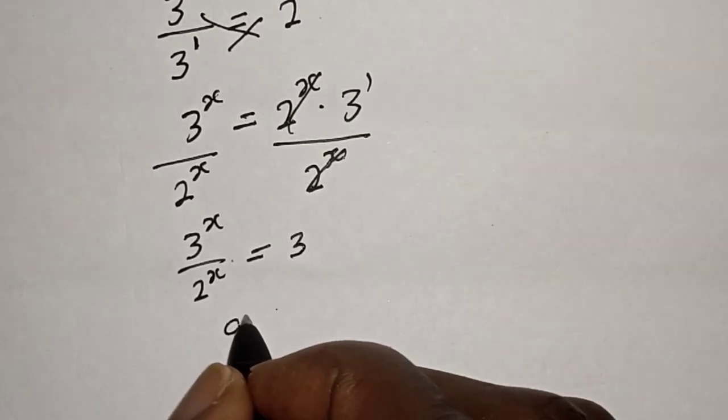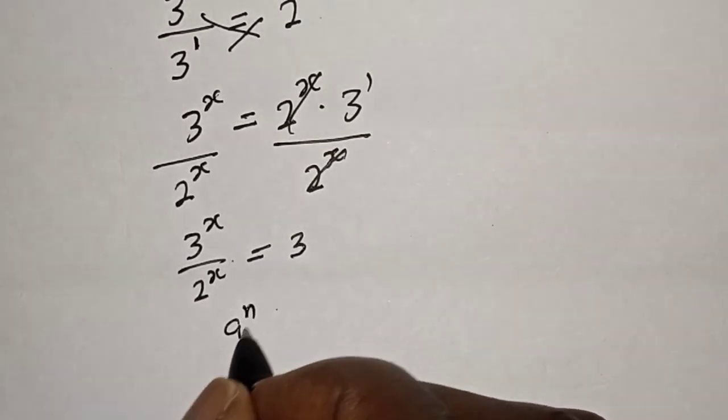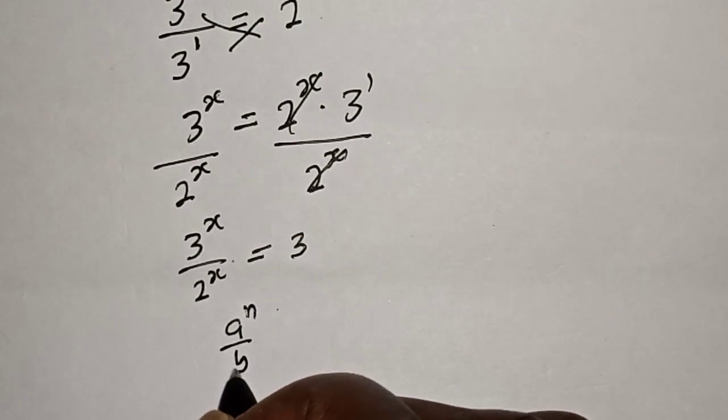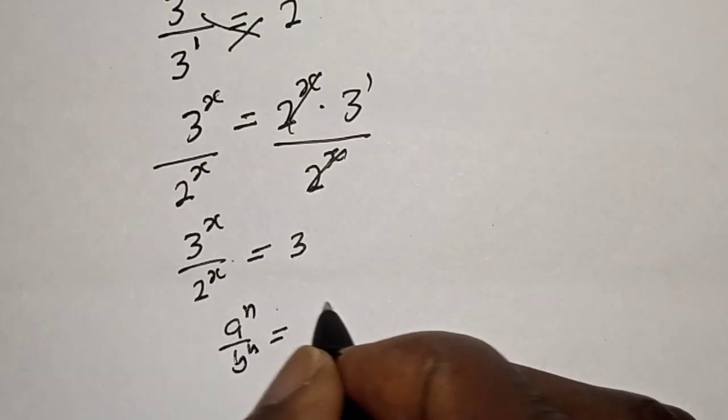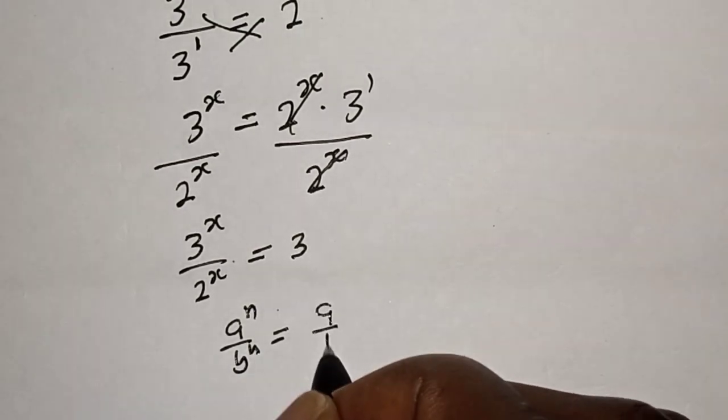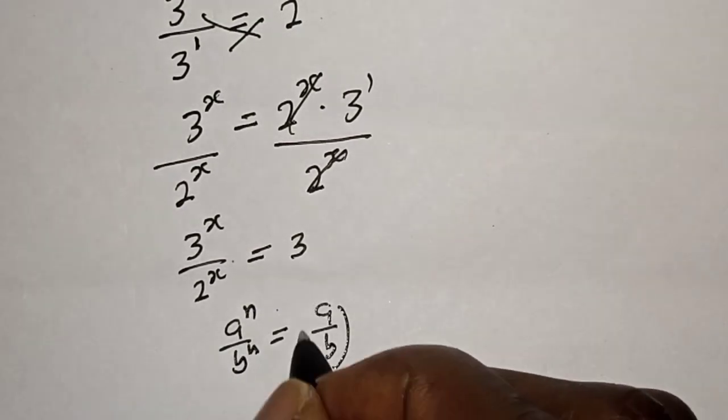Now if you have a raised to power n over b raised to power n, this is equal to a over b to the power of n. So 3 over 2 raised to power s is equal to 3.